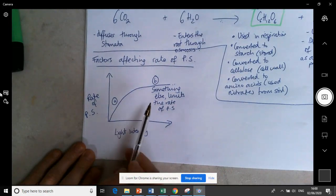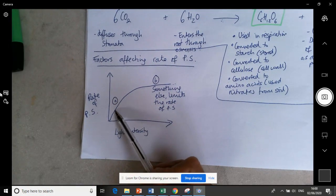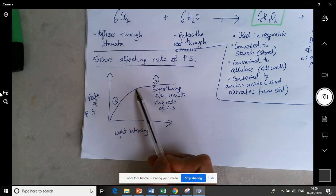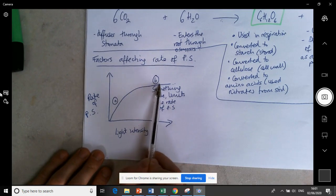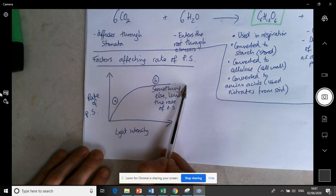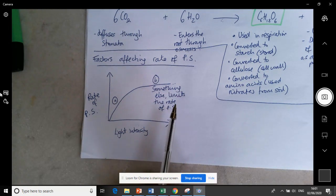That means that something else limits the rate of photosynthesis. In this case here as we increase light intensity the rate increases, but from this point onwards even if we increase light intensity the rate stays the same. Therefore something else is limiting the rate of photosynthesis.